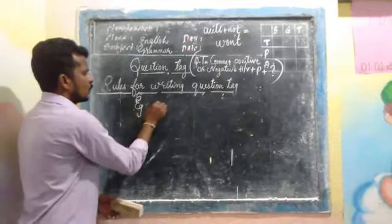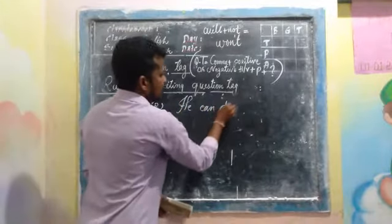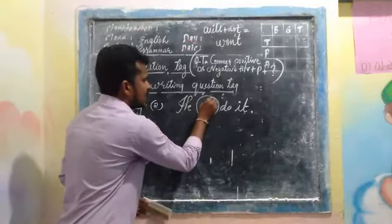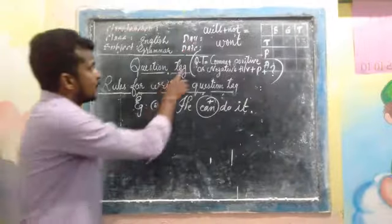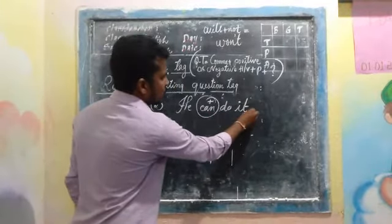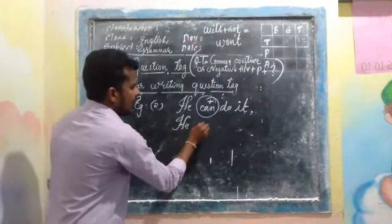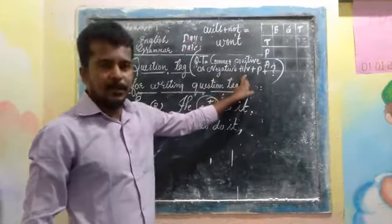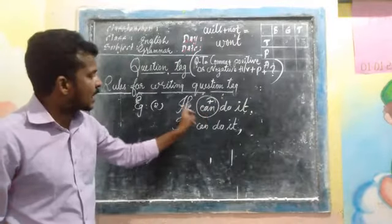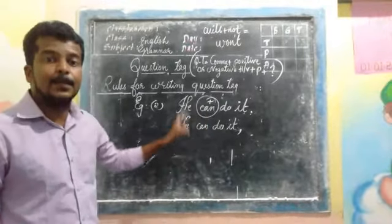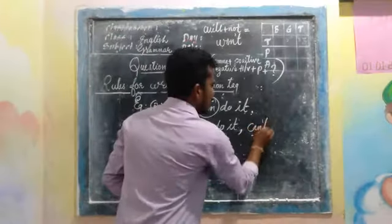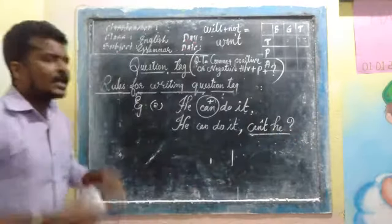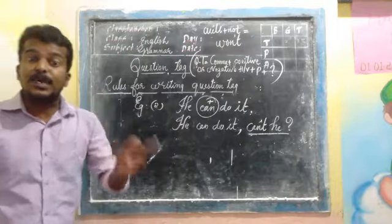Example 2: 'He can do it.' The helping word is 'can,' which is the positive form. As per rule one, we add a comma: 'He can do it,' — then the tag is negative since the sentence is positive. The negative form of 'can' is 'can't.' The pronoun of the subject 'he' is 'he.' So the final sentence is: 'He can do it, can't he?' — confirming whether he can do it or not.